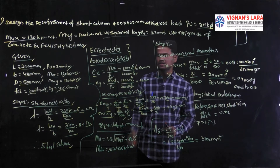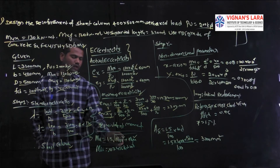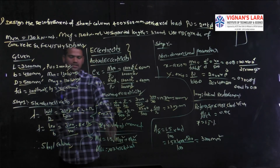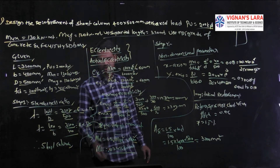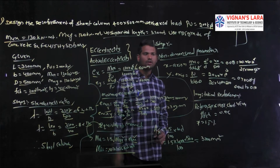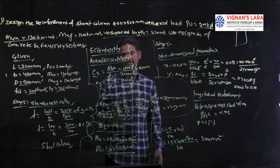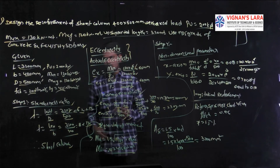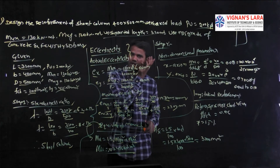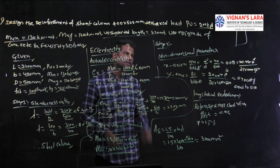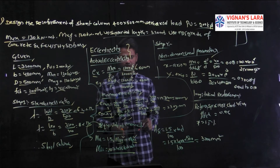The equivalent moment acting on the column per IS 456:2000 is: Mu = 1.5 × √(Mux² + Muy²). Substituting Mux = 130 kNm and Muy = 120 kNm, the ultimate equivalent moment = 203.456 kNm. This equivalent moment is used for designing the section when the column is subjected to biaxial bending.